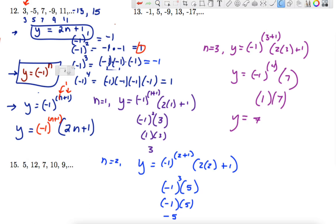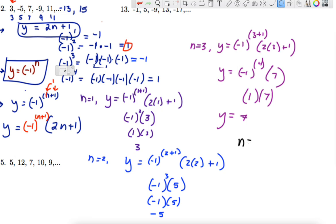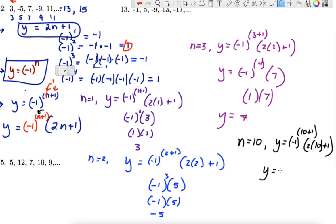We're also asked to find the 10th term. When n equals 10: y equals negative 1 to the (10+1) times (2 times 10 plus 1). That's negative 1 to the 11th times 21. 11 is an odd power, so negative 1 to the 11th is negative 1. Negative 1 times 21 gives us negative 21. That's the 10th term.